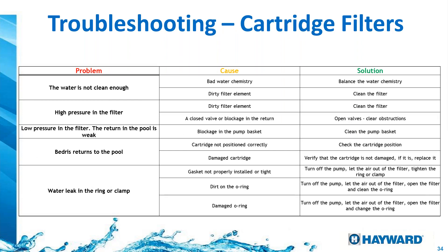Some troubleshooting for cartridge filters: if you have high pressure in the filter, it is most likely a dirty element or some valve blocking the return. If you have debris returning into the pool, your filter media is broken somewhere, allowing water to pass through unfiltered.